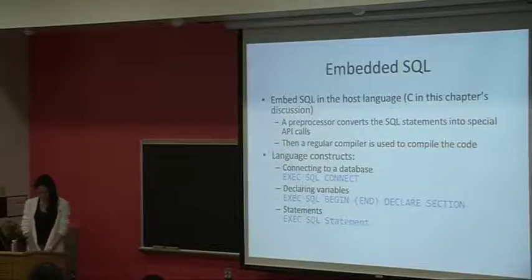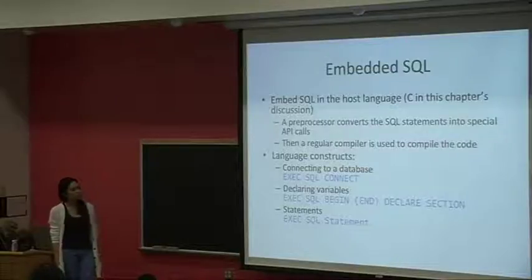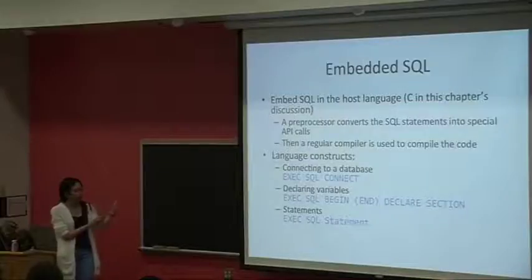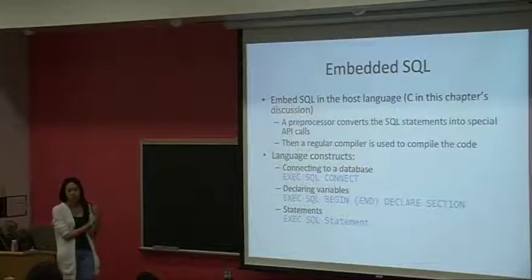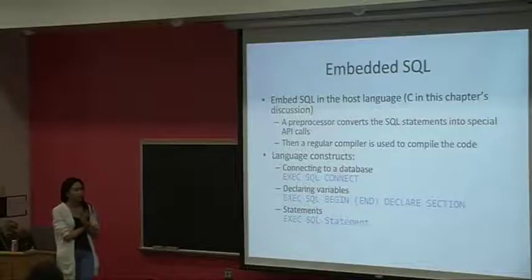For embedded SQL, we just put SQL in the host language program. What happens is that our preprocessor will convert the SQL statements into special API codes, so you don't really need to look into any APIs — you just directly put the SQL code embedded into your program. In Python, sometimes you can just send it in as a string. A regular compiler is then used to compile the code. Throughout this chapter, examples will be illustrated in C, but the big picture applies broadly.